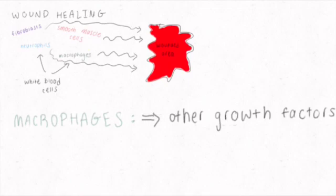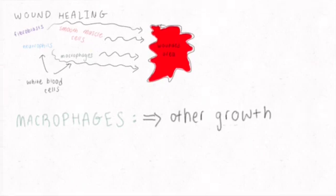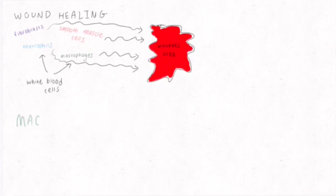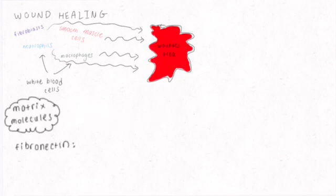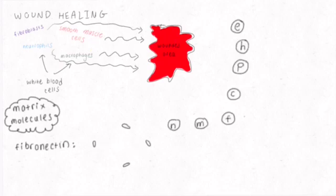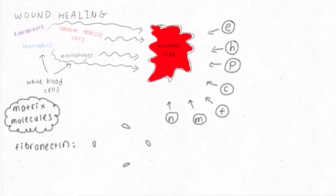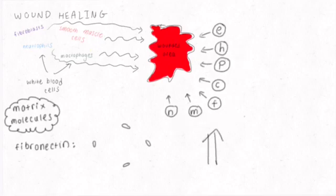The macrophages produce other growth factors that are important to the healing process. PDGF signaling also stimulates production of matrix molecules such as fibronectin, which promotes the spreading of platelets at the site of injury, and the migration of neutrophils, monocytes, fibroblasts, collagen, proteoglycans, hyaluronic acid, and endothelial cells into the wound region.